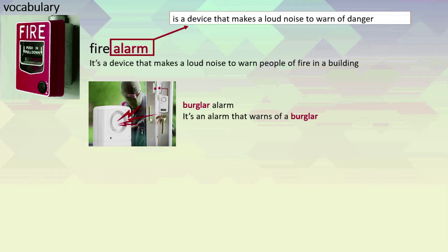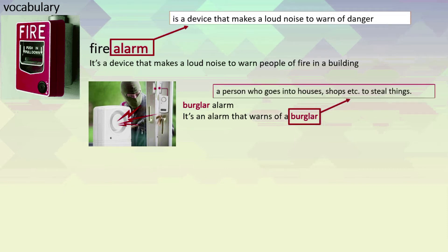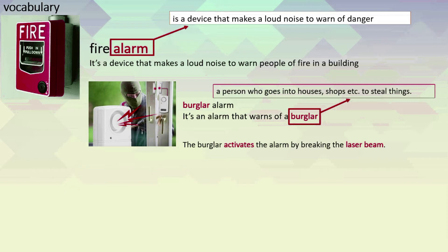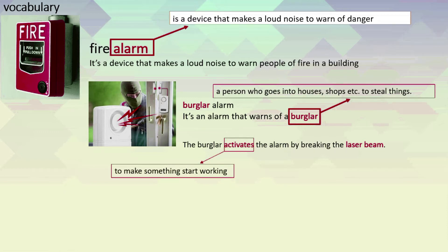A burglar alarm is an alarm that warns of a burglar. And who is a burglar? A burglar is a person who goes into houses, shops, or similar places to steal things. The burglar activates the alarm by breaking the laser beam. What do you mean by activate here? Activate means to make something start working. And this is a laser beam.